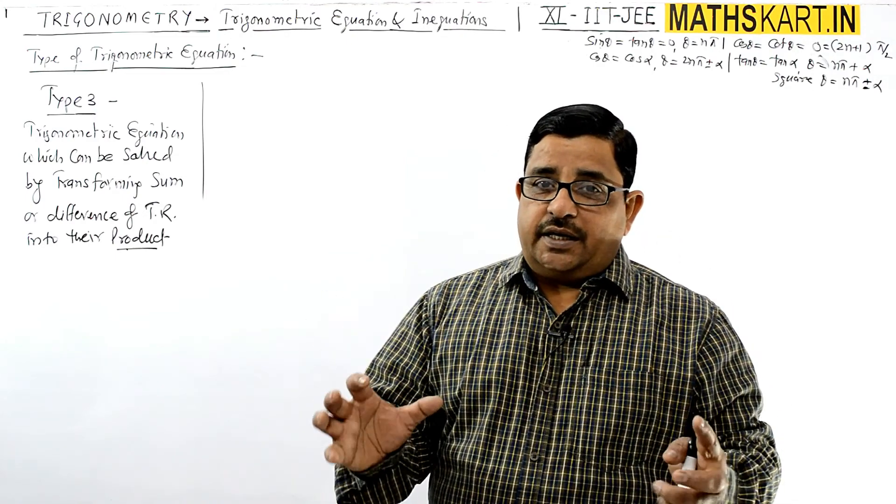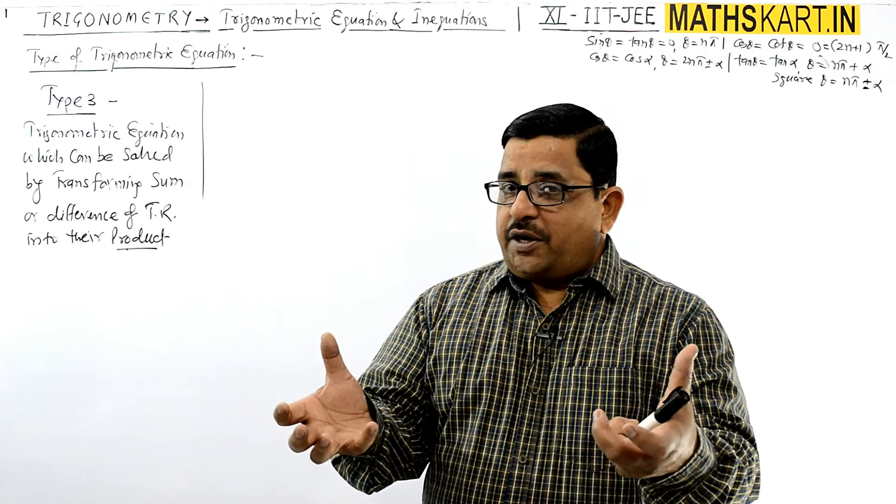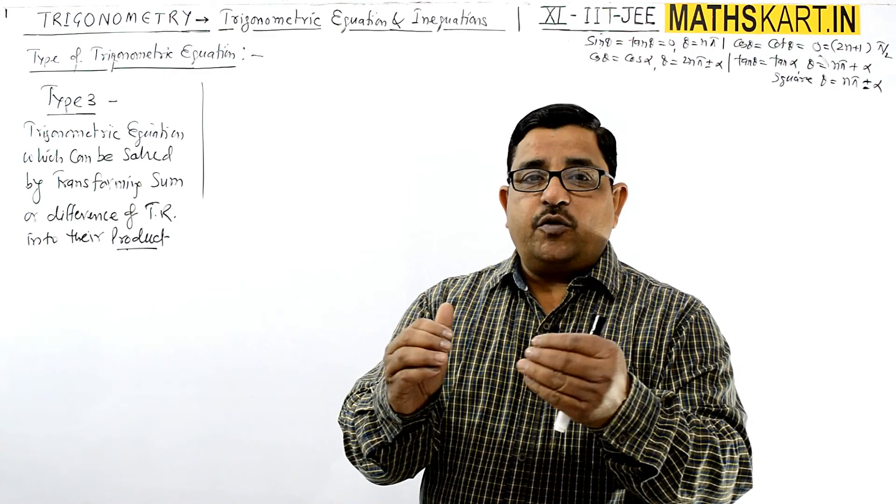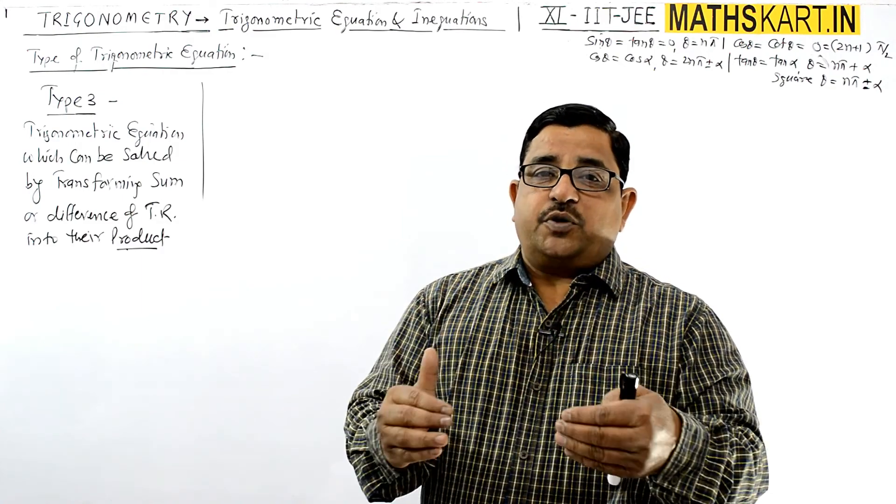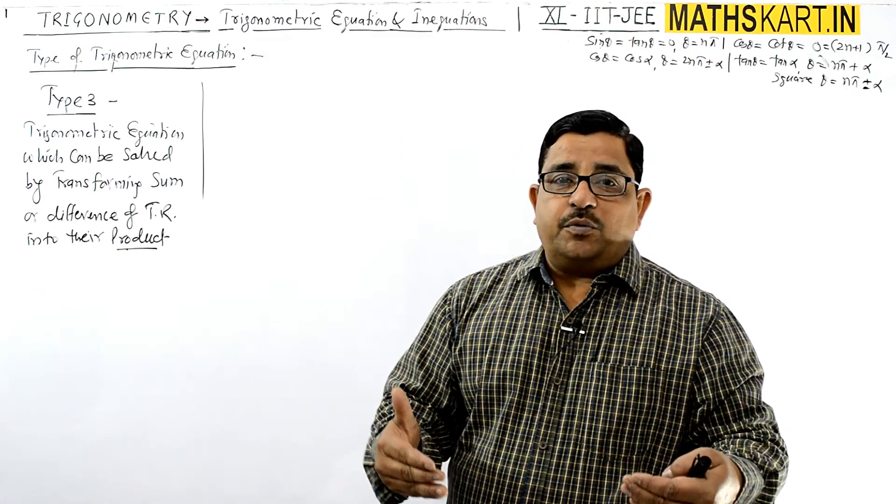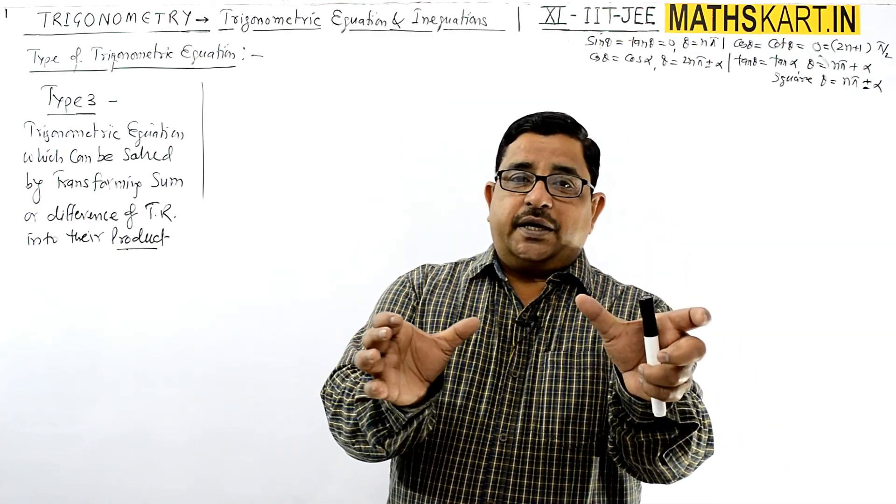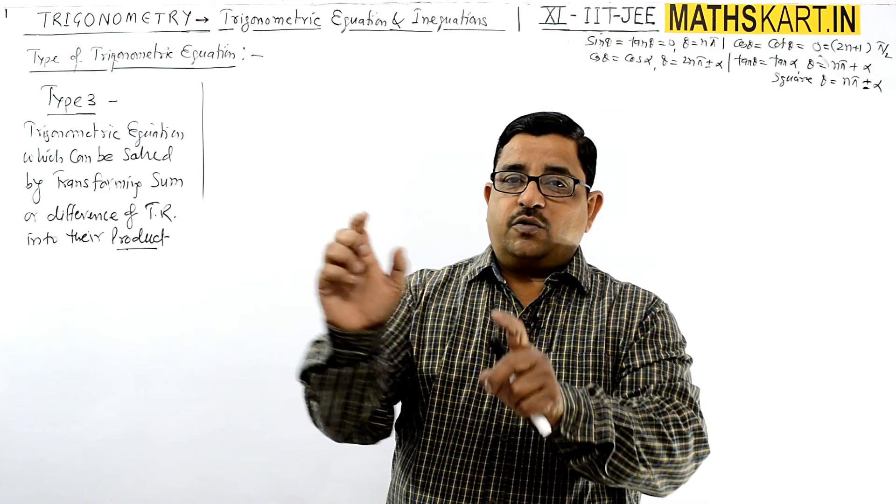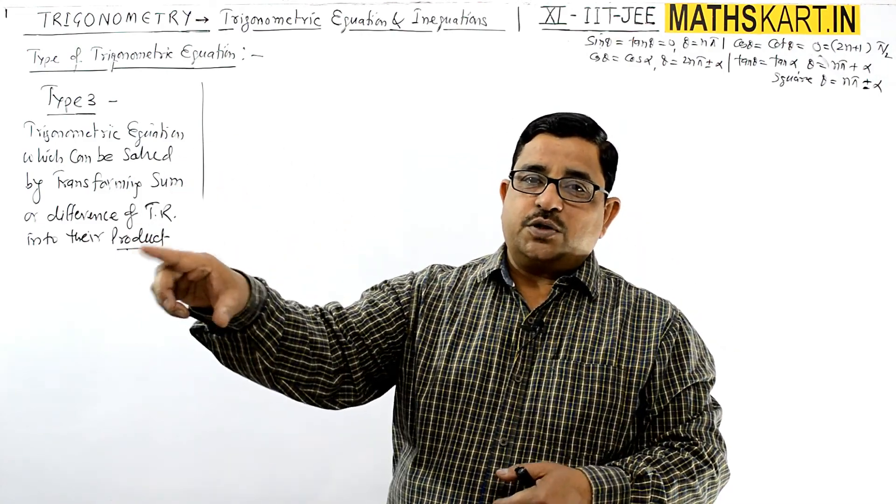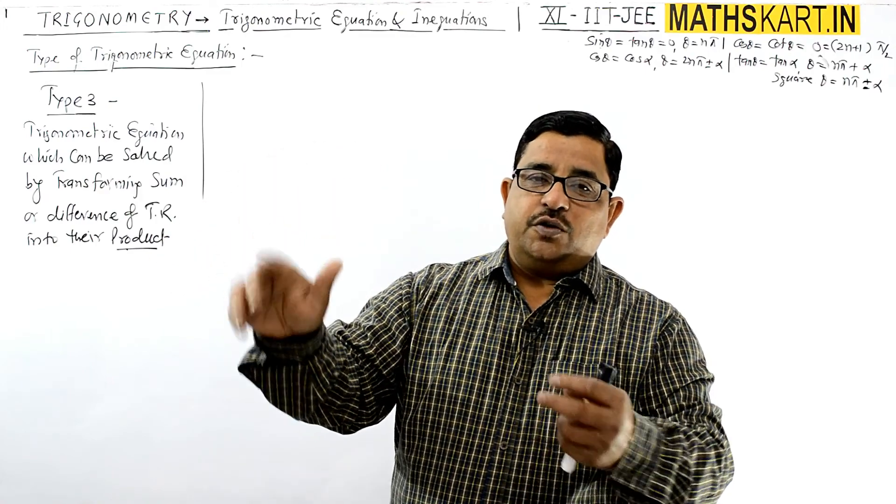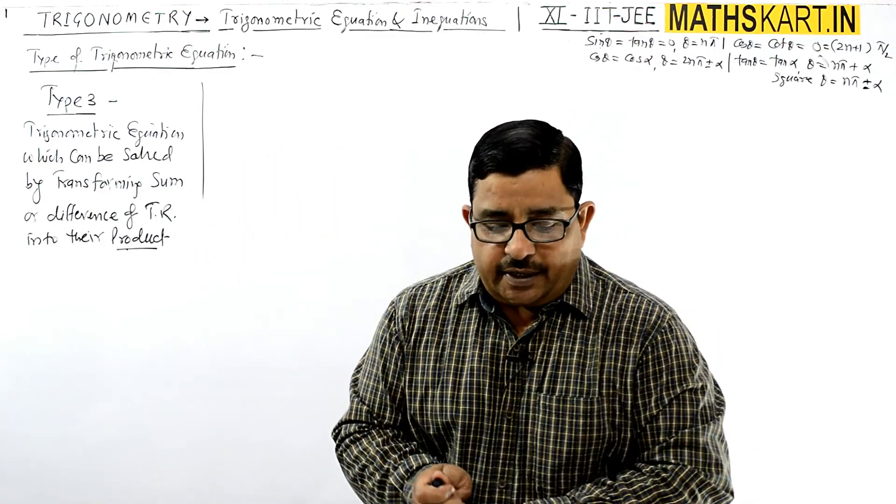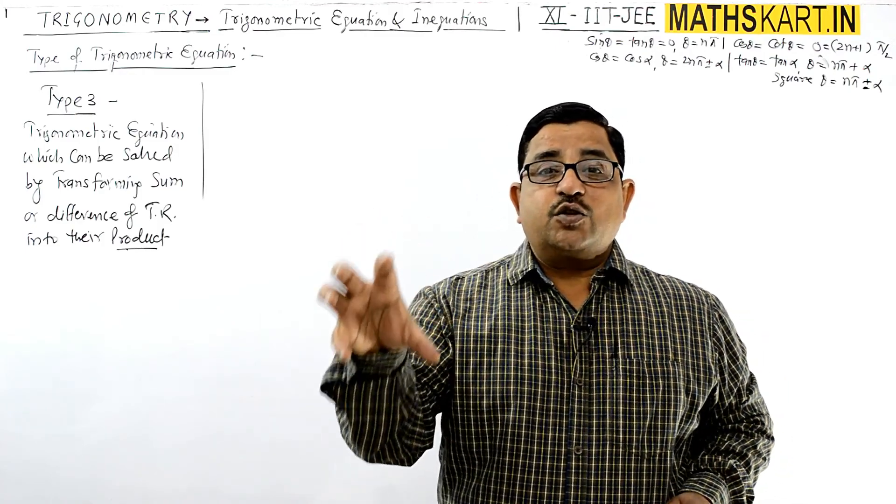The concept is that if trigonometric ratios are in sum form, separated with plus or minus signs, you can write them in product form. When you write it in product form, there are factors - one factor times another factor equals zero. Then you can write the first factor equals to zero, second factor equals to zero, and write down the solution. It's a very easy concept. You just have to see which two terms to combine.